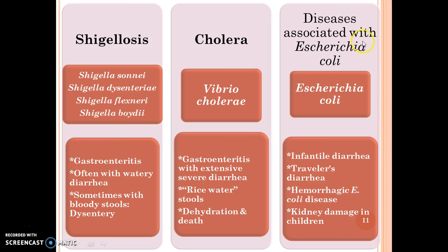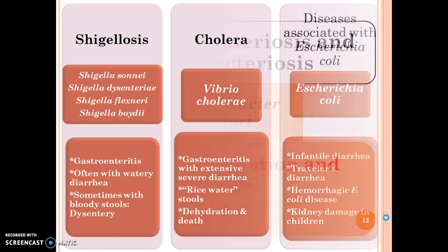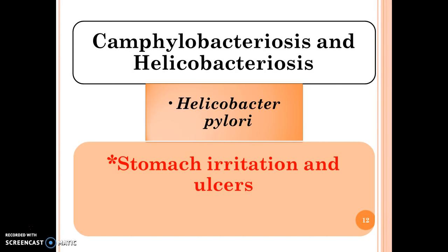Diseases associated with Escherichia coli — also called infantile diarrhea, traveler's diarrhea, and hemorrhagic E. coli disease — may cause kidney damage in children. Campylobacteriosis and Helicobacteriosis are caused by Helicobacter pylori; the major symptom is stomach irritation and ulcers.